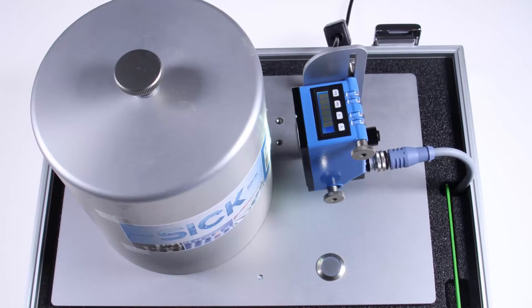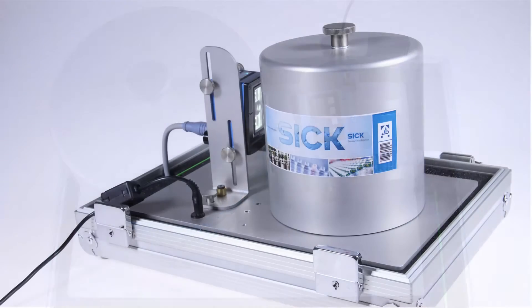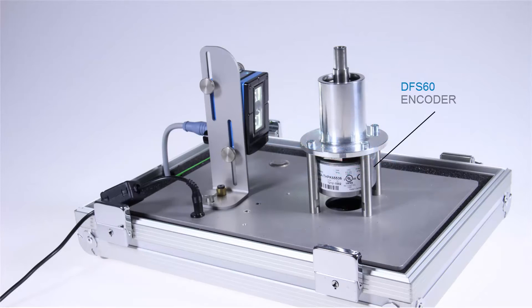The sensor is installed within a perfect distance of 20mm to a drum on which a SICK label is fixed. Below the drum, there is an encoder from the DFS60 product family which is necessary in order to provide the necessary impulse information to the sensor.